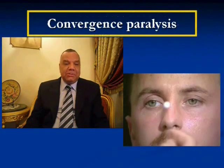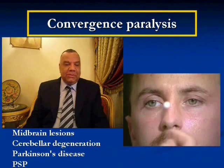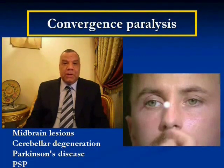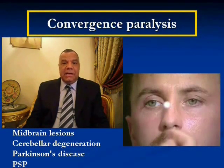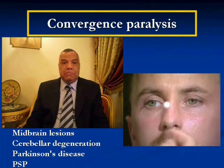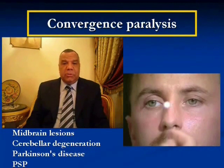This is an easy disorder — all of you will know it. Ask the patient to look at a moving target in the z-axis. He can't converge; he has a convergence paralysis, which denotes lesions of the midbrain, cerebral lesion, Parkinson's disease, and also progressive supranuclear palsy. Don't forget there are some peripheral diseases that lead to convergence insufficiency or almost convergence paralysis, like thyroid eye disease or any other causes of restrictive orbitopathy.